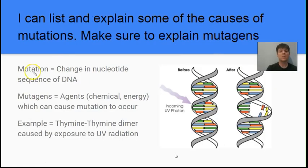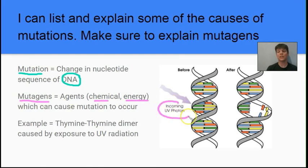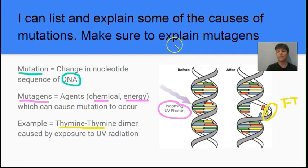Our next learning target is to list and explain some causes of mutations, and we'll be discussing mutagens. A mutation is a change in the nucleotide sequence of a DNA molecule — for example, ATGC might turn into AGGC — which can lead to changes in an RNA sequence and ultimately change a protein. Mutagens are agents, either chemical or energy-based, which can cause a mutation. Ultraviolet radiation is an example of a mutagen. One possible mutation caused by UV light is the formation of a thymine-thymine dimer — the UV light causes the DNA to unzip briefly, and neighboring thymines can cross-link to each other instead of pairing back with adenine.